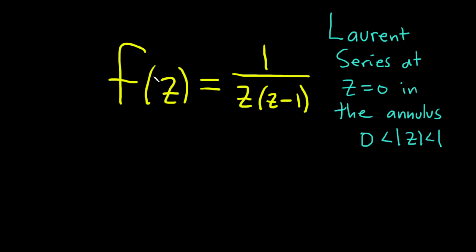In this video we're going to look at this function, it's a function of a complex variable z. f of z equals 1 over z times z minus 1. And we're going to find what's called the Laurent series centered at z equals 0 in this annulus. So let's go ahead and work through it.